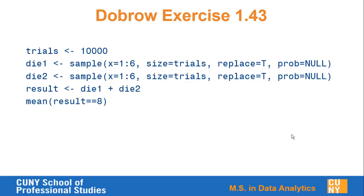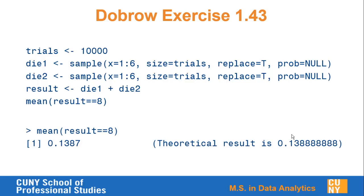I'll take the mean of result == 8. What does that do? Well, result == 8 is a comparison vector — I get trues and falses. For each element of result, I get true if it equals 8, false if it doesn't. The mean function then computes how many of those results were true divided by how many there were total. When I ran the experiment, I got a mean of 0.1387, which is very close to the theoretical result, which is 5 divided by 36, or 0.1388 repeating.